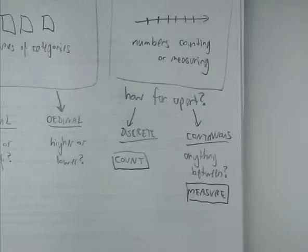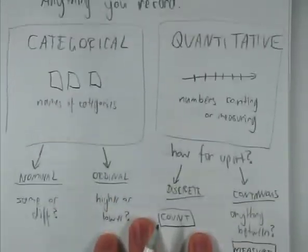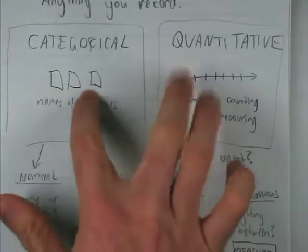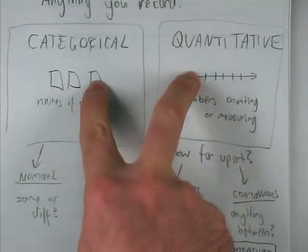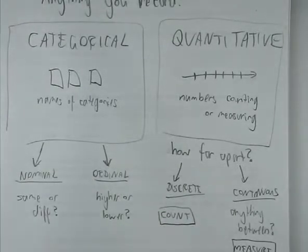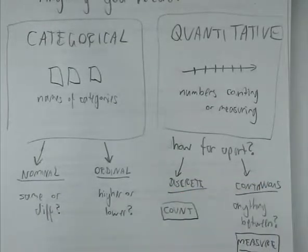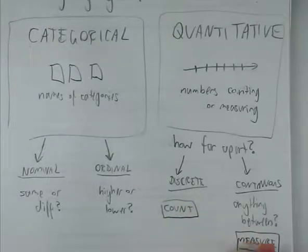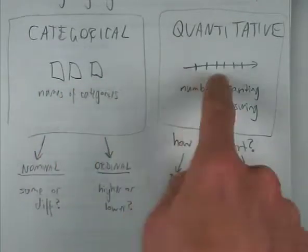It doesn't really make much practical difference most of the time whether something is discrete or continuous. In terms of choosing what stats goes with what, the big issue is between categorical versus quantitative. Nominal and ordinal doesn't really make a difference to the stats — you just treat everything as nominal. Discrete versus continuous doesn't really make a difference to hypothesis tests or confidence intervals either — you can still calculate an average of either a counted or measured thing.